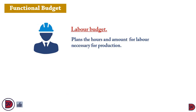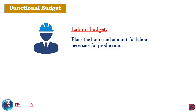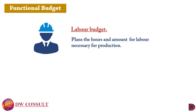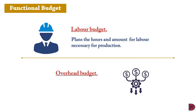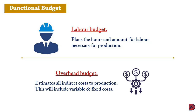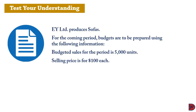The labor budget looks at how many labor hours and at what cost the business needs to produce the quantity estimated by the production budget. For example, if it takes 1 hour to produce a unit and you are producing 30,000 units, you need 30,000 hours; at $10 per hour, that is $300,000 for labor. The overhead budget covers the indirect expenses needed to produce and sell, such as electricity, water, warehouse costs, indirect staff salaries, factory overheads, and administrative staff.